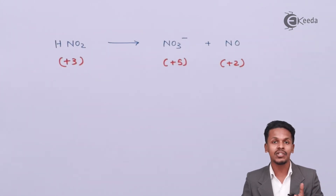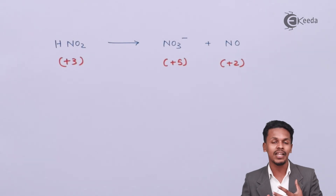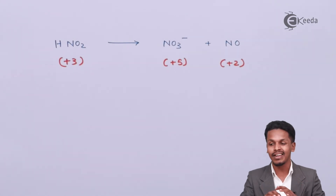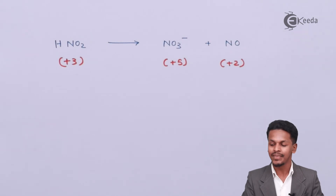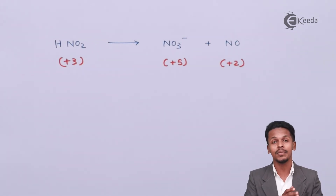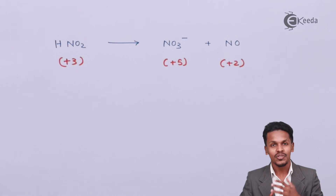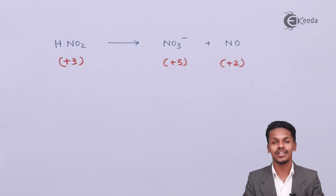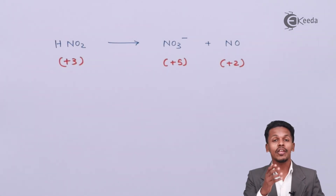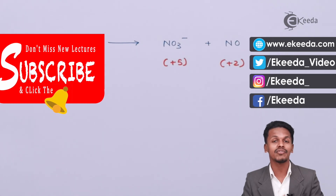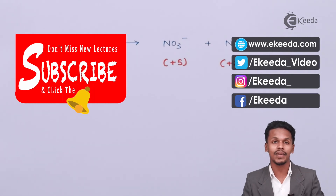All these disproportionation reactions proceed through an aqueous medium, so we consider them in aqueous medium only. Oxidizing agents like KMnO₄ or HNO₂ can undergo disproportionation reactions. Thank you friends for watching this video; I hope you have understood this reaction clearly. Don't forget to subscribe to the channel — thank you so much.